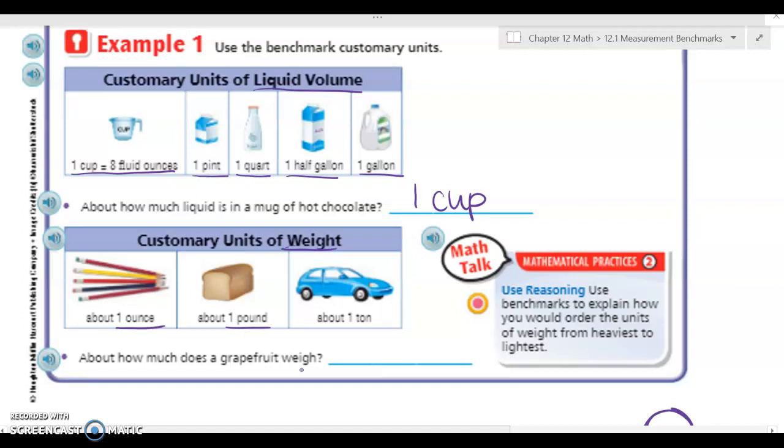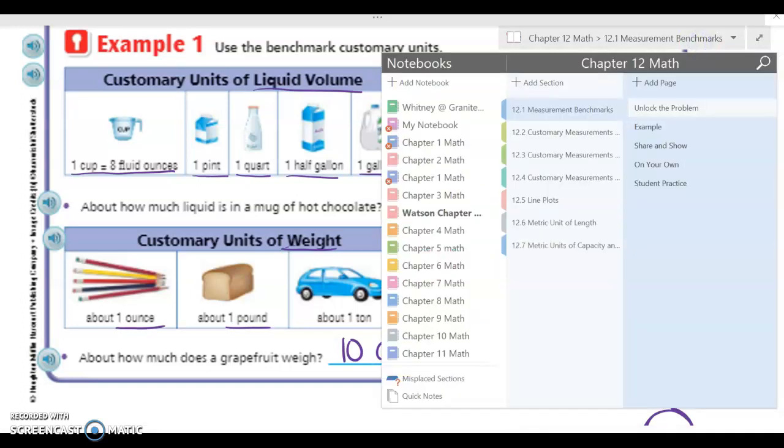So I know it's smaller than that. However, if I think about my pencil, it weighs a lot more than a pencil. So I'm gonna estimate that grapefruit weighs about 10 ounces. Okay, and that's our first page. Let's go ahead and turn the page to look at more measurements.